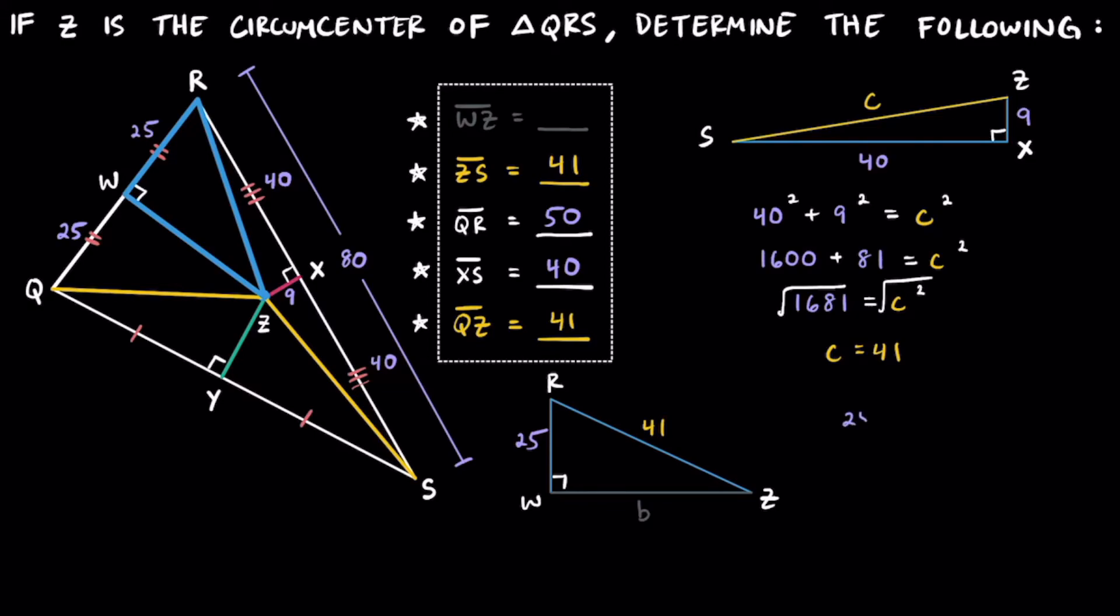Writing this as an equation, we can go ahead and write 25 raised to the second power, plus this B raised to the second power, we don't know what that is, that's what we're looking for. And that's going to be equal to this 41 squared as well.